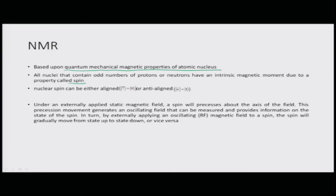Nuclear spin can be either aligned or anti-aligned, representing zero and one states. Under an externally applied static magnetic field, a spin will precess about the axis of the field; this precession generates an oscillating field that can be measured and provides information on the spin state. By externally applying an oscillating RF magnetic field to a spin, the spin will gradually move from state up to state down, or vice versa.